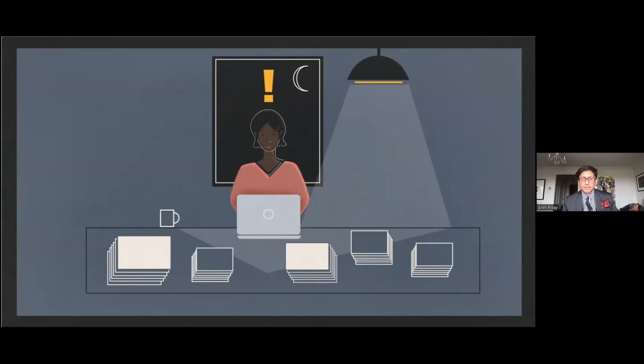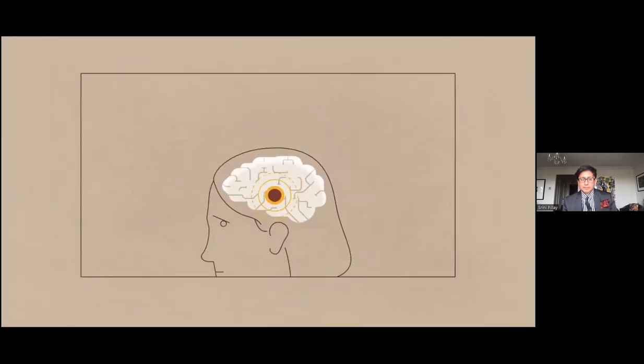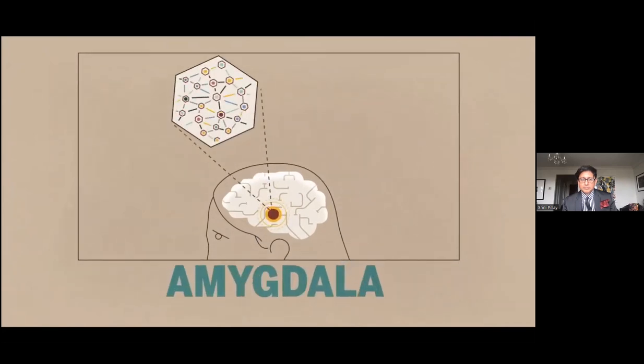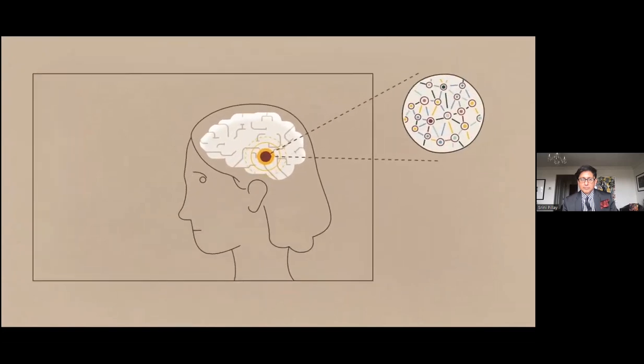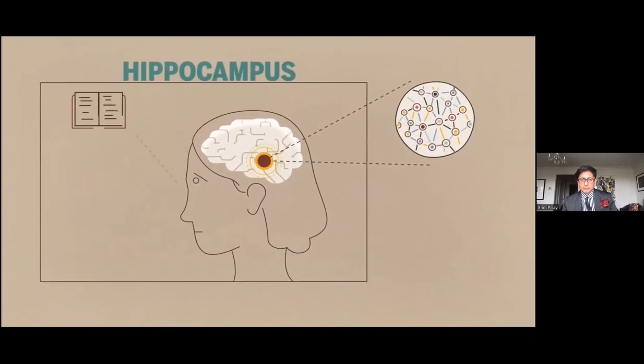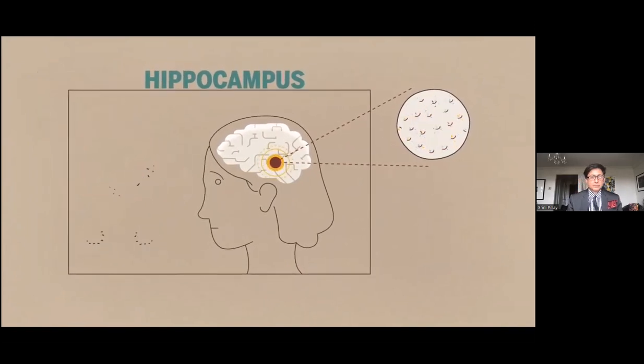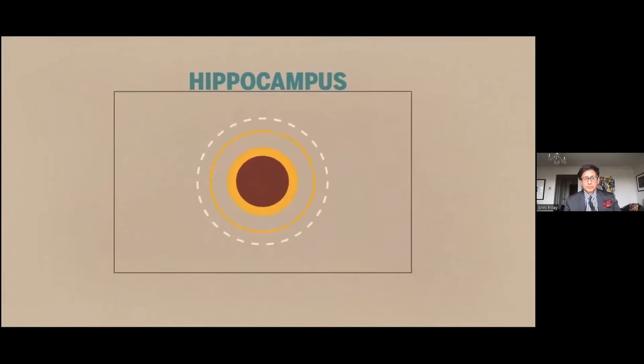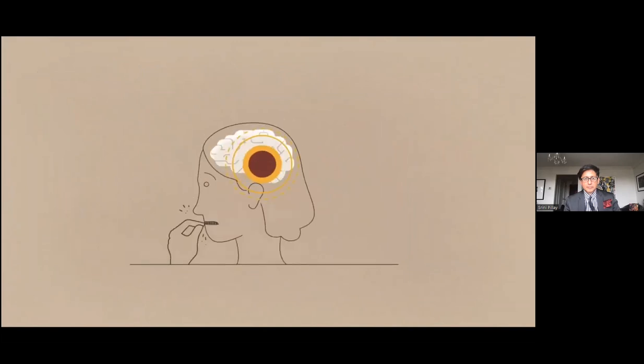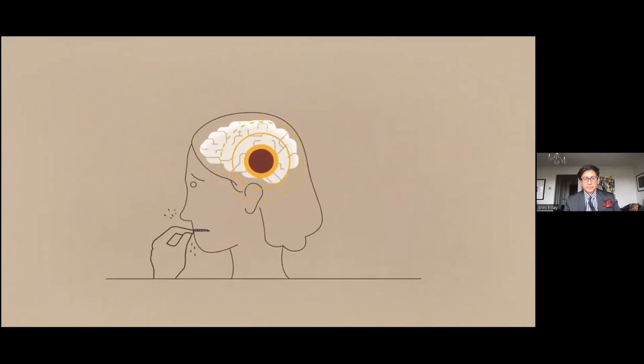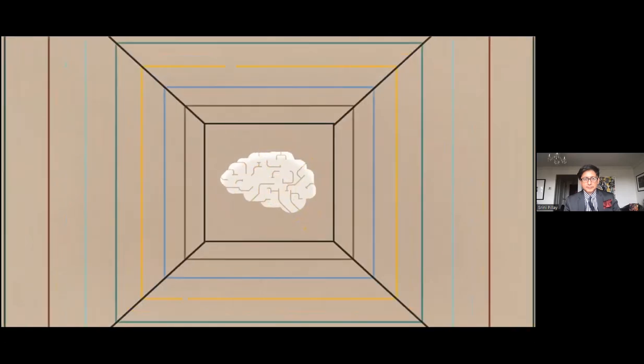But high levels of cortisol over long periods of time wreak havoc on your brain. For example, chronic stress increases the activity level and number of neural connections in the amygdala, your brain's fear center. And as levels of cortisol rise, electric signals in your hippocampus, the part of the brain associated with learning, memories, and stress control, deteriorate. The hippocampus also inhibits the activity of the HPA axis, so when it weakens, so does your ability to control your stress.